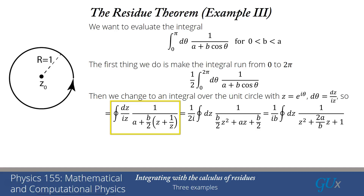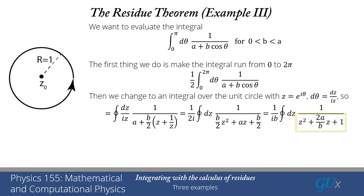Multiplying through by the z from the iz term, the denominator becomes (b/2)z² + az + b/2. Factoring out b/2 gives z² + (2a/b)z + 1. That's a quadratic equation. Calling its roots z₊ and z₋ and applying the quadratic formula: z₊₋ = (−a/b) ± √(a² − b²)/b. Notice the constant term equals 1, which equals z₊ · z₋, so z₊ = 1/z₋.